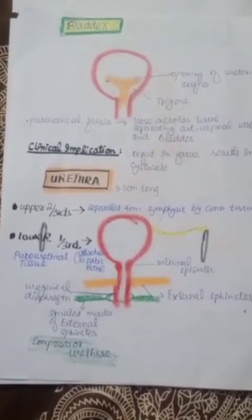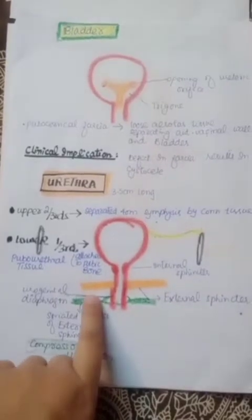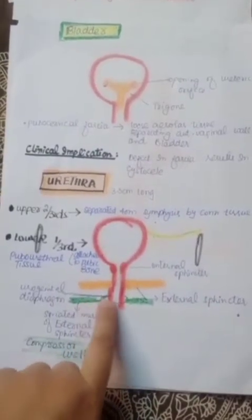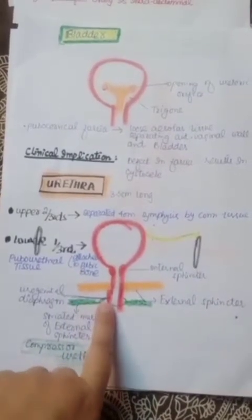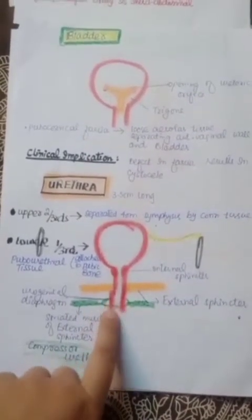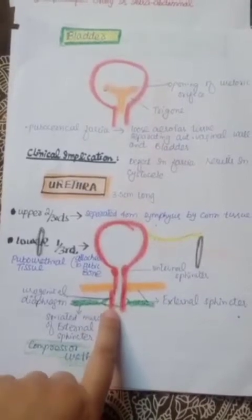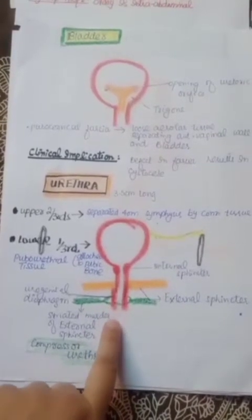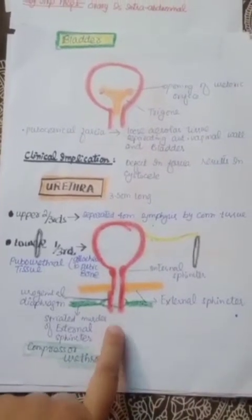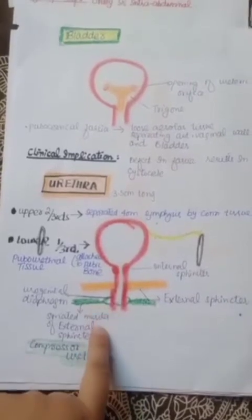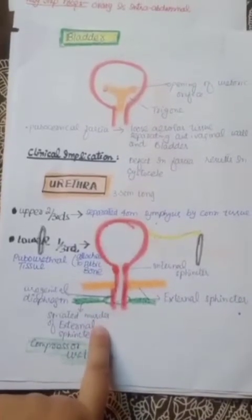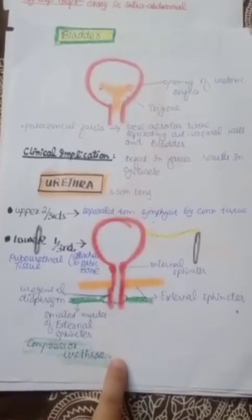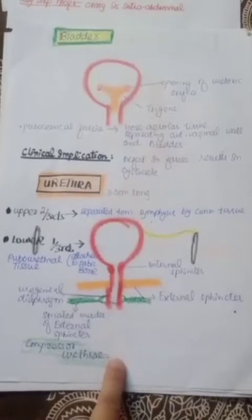The urethra pierces the urogenital diaphragm as shown in the picture. The urethra has internal sphincter muscles and external sphincter muscles. The external sphincters are striated muscles and are also called the compressor urethra.